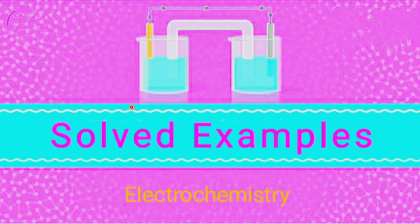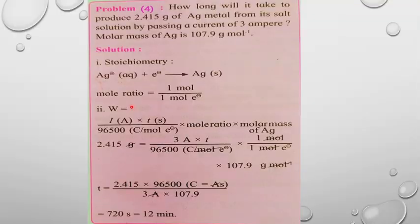Hello students, good afternoon. Yesterday we studied the numericals of molar conductivity to find out the conductivity, Kohlrausch's law, and the example of the cell constant. Next, the fourth example in electrochemistry: how long will it take to produce silver metal from its salt solution?